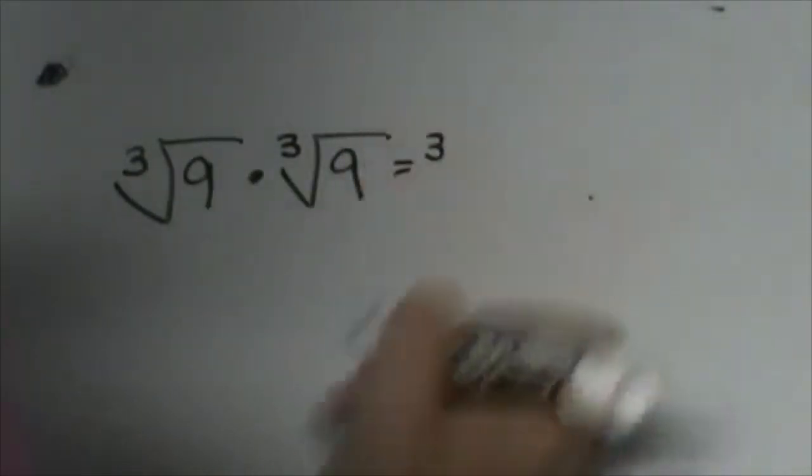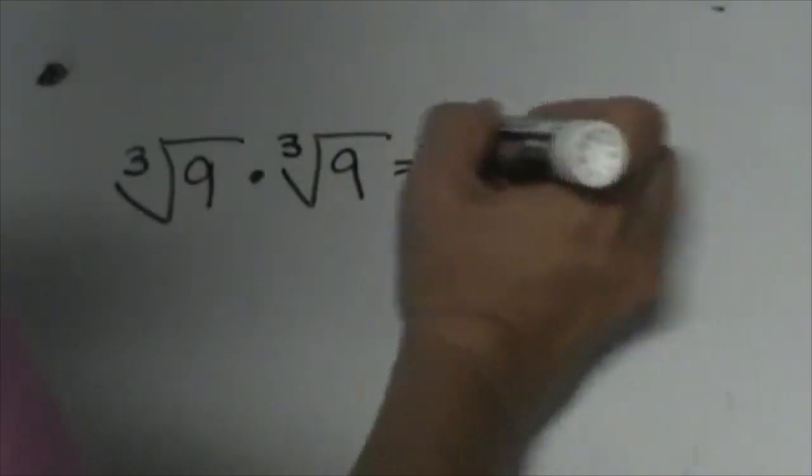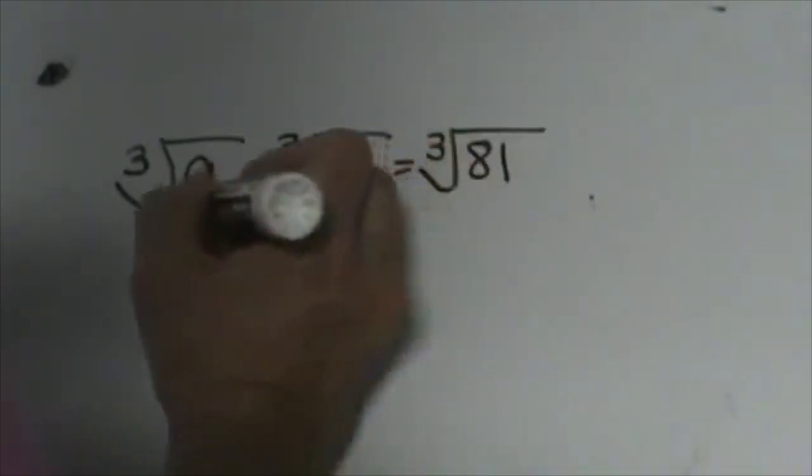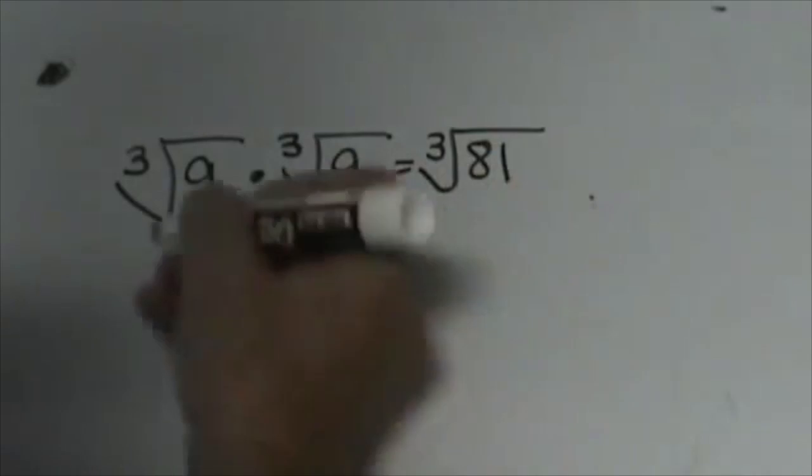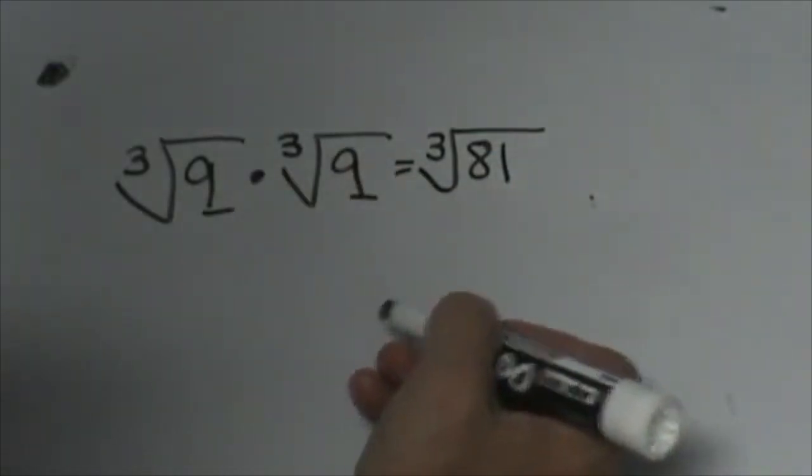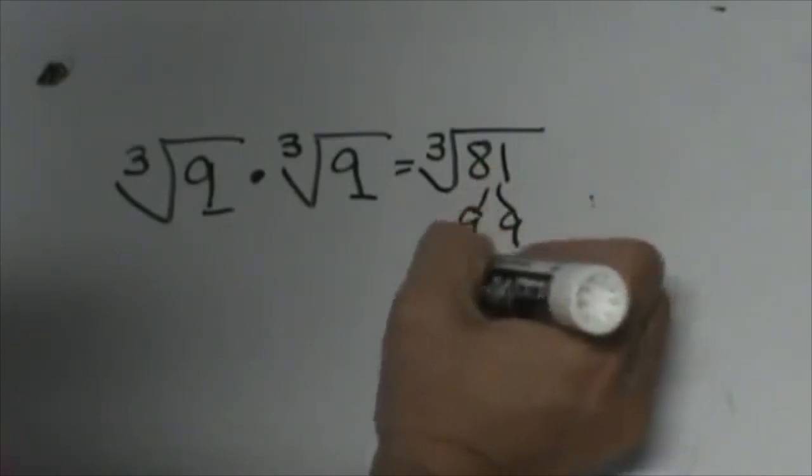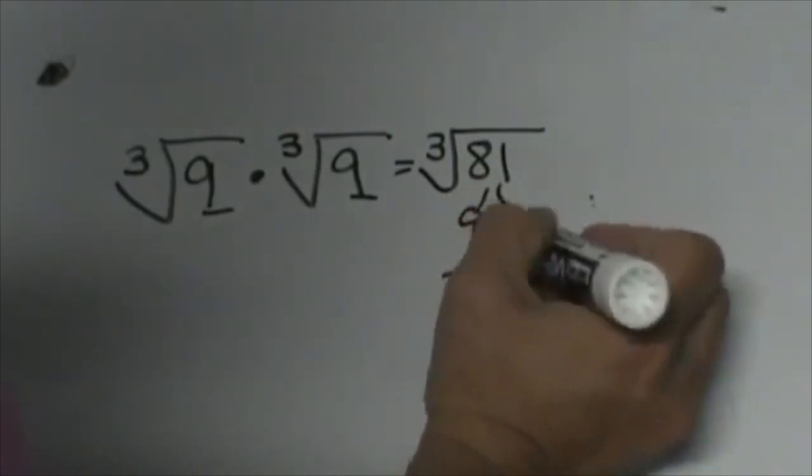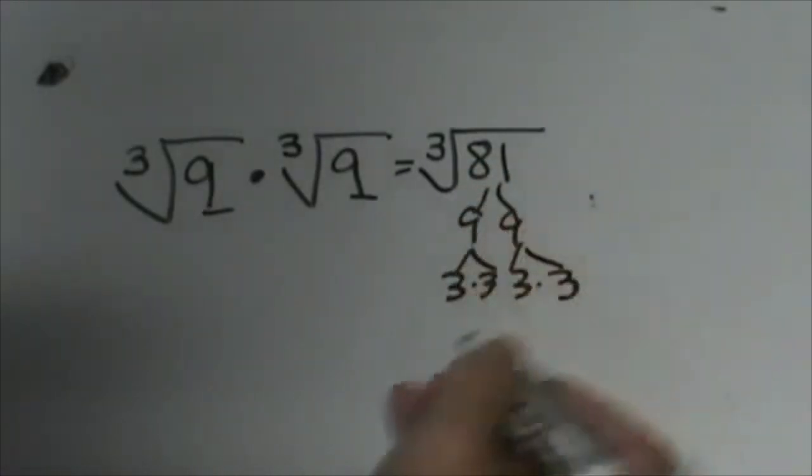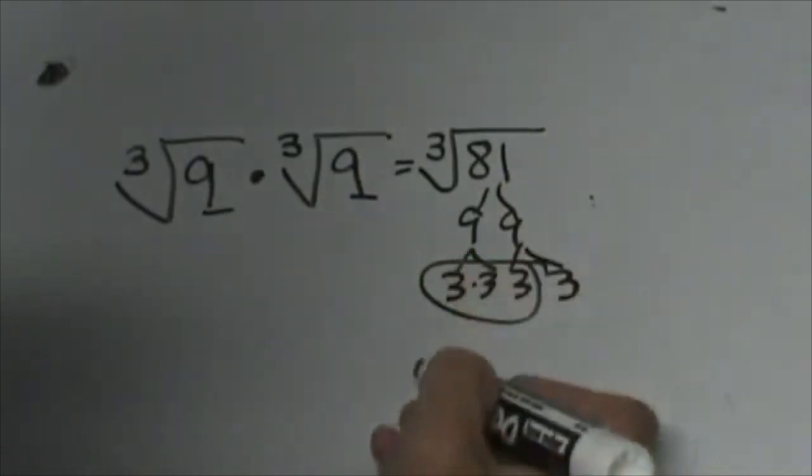And I get the cube root of 81 because 9 times 9 is 81, so you are going to multiply the bases together. And then we know that 81 is just 9 times 9, and that's 3 times 3 times 3 times 3, and then I can take a group of 3 out.